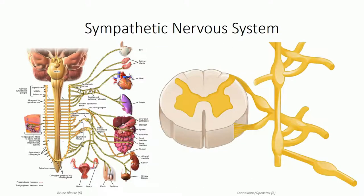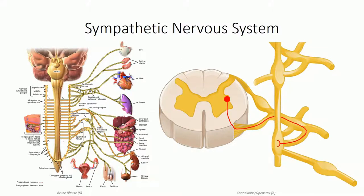Despite the diverse paths taken by the sympathetic nerve branches, they all begin in the same fashion. Pre-synaptic axons project from the cell bodies in the lateral horn of the spinal cord, enter the spinal nerve, then project into the sympathetic chain through the white rami communicans, located between T1 through L2. From here, the paths diverge.